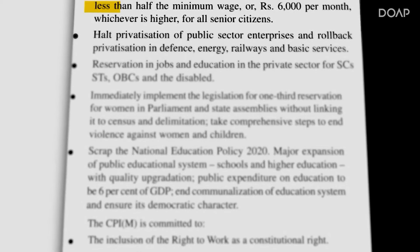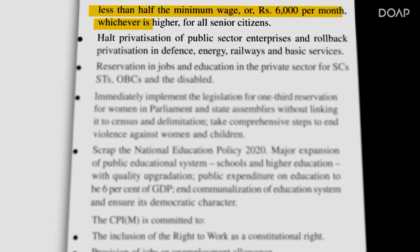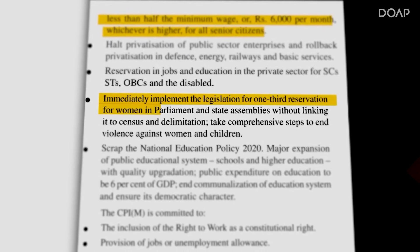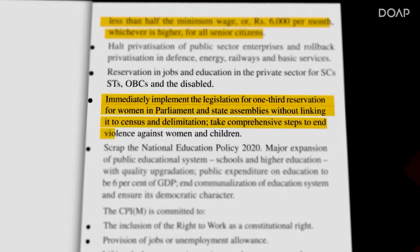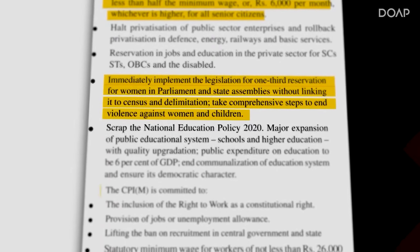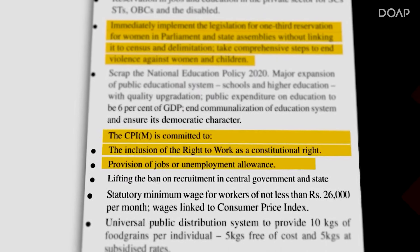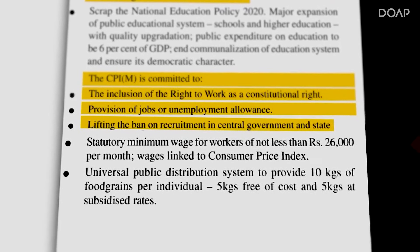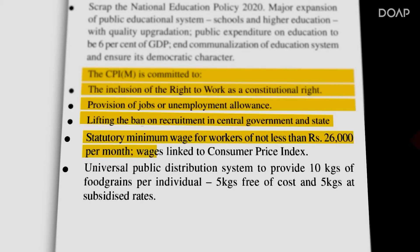Now let's talk about the most important pillar: citizen benefits — the benefits that you and I get. CPIM has divided citizens into three parts: senior citizens, to whom they guarantee ₹6,000 pension; women, for whom they would guarantee one-third of the seats in parliament; and thirdly, providing the right to work to the youth. There are some other points as well, including giving everyone a basic salary of ₹26,000 per month, and everyone to get free and subsidized ration — 5 kg worth for free, and anything over 5 kg would be subsidized.